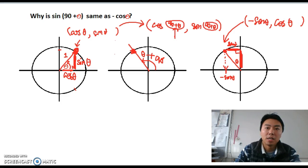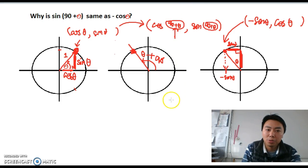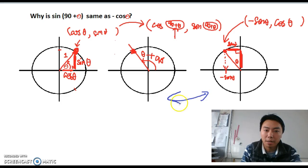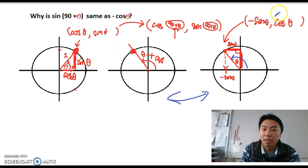By looking at these two diagrams, they're exactly the same thing — both are talking about 90 degrees plus θ. By comparing the y-values of the two representations, we can establish the identity.